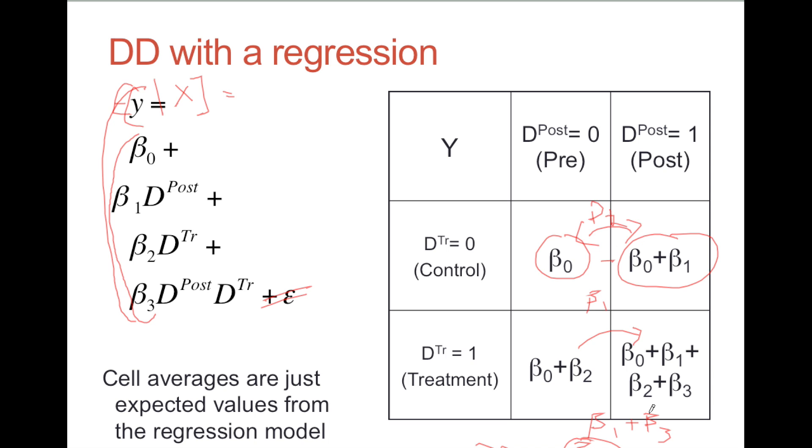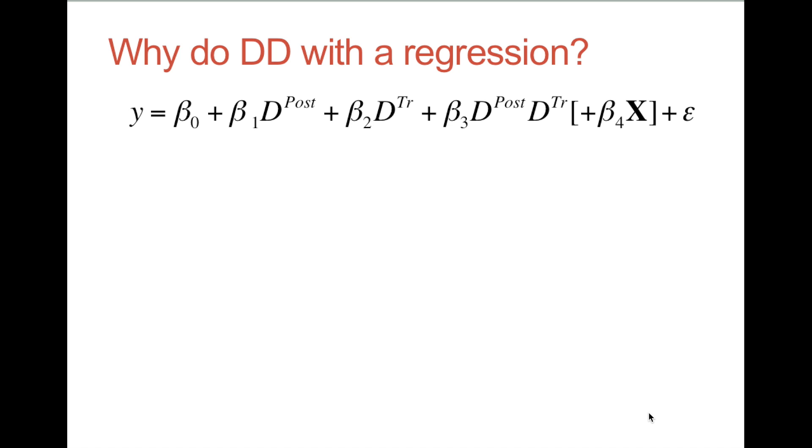So we can do it, but why would we want to compute our difference-in-difference estimate using a regression? Well, there are three reasons. First of all, anytime we run a regression, our stats software is going to give us estimates of the standard errors for our coefficients. We don't have to do anything special at all, and we get standard errors for our diff-in-diff estimate. That's convenient.